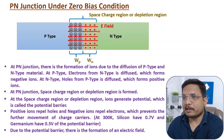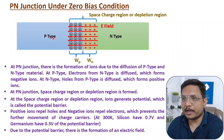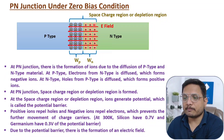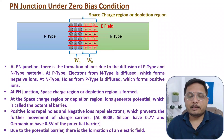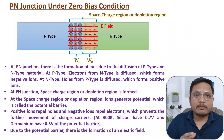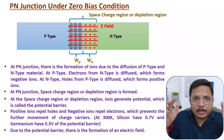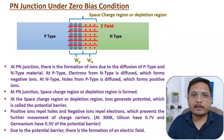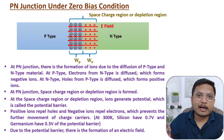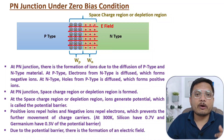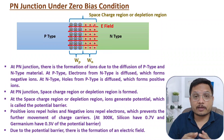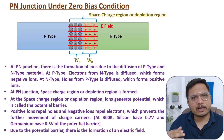The electric field direction in the depletion region is from N-type to P-type. The derivation of this electric field will be covered in upcoming videos. Watch this video series in sequence and you will understand how all these things happen and how the formulas are derived.